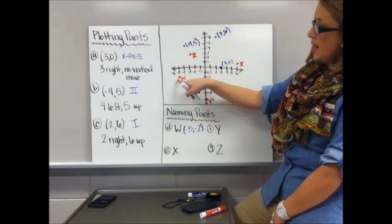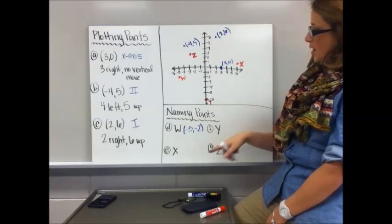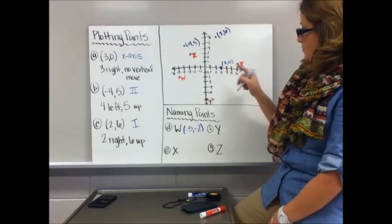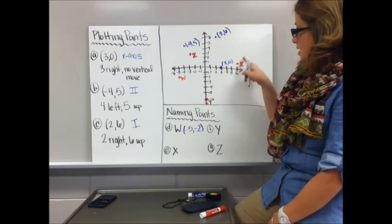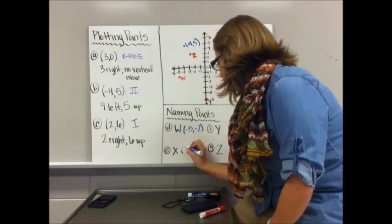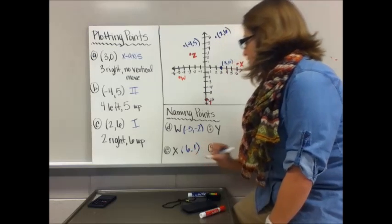Notice that the point is located where the point is, not the letter that's naming it. Coordinate X, it's up here. So I'm going to go right six and up one. Right and up are both positive. So it's positive six, positive one.